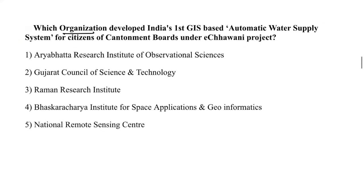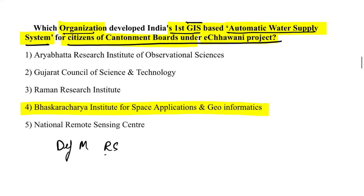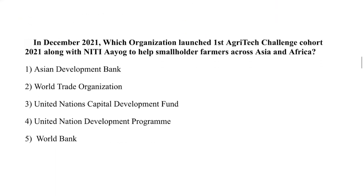Under the e-Chhawani project, BISAG-N, the Bhaskaracharya Institute for Space Applications and Geo-Informatics, developed India's first GIS-based automatic water supply system for citizens of cantonment boards. GIS stands for Geographic Information System. This was launched by Defense Minister Rajnath Singh.